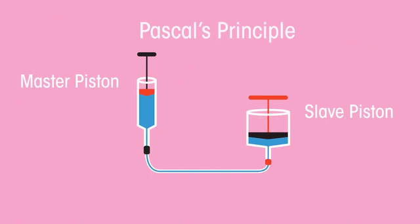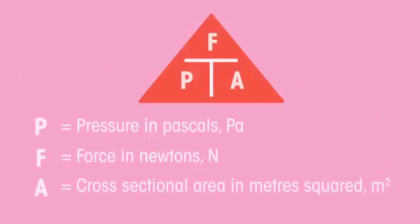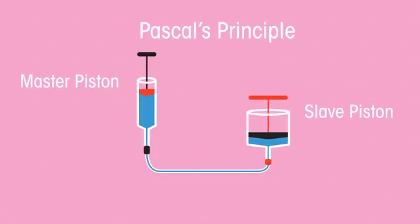Because liquids cannot be compressed, the pressure stays constant between the master and slave piston. And thanks to the relationship between pressure, force and area, it means a relatively small force can be applied to the master, which will result in a much larger force of the slave.